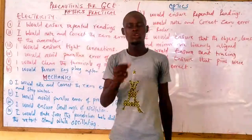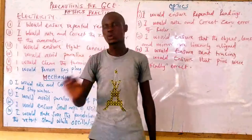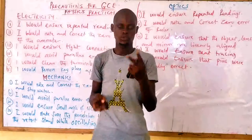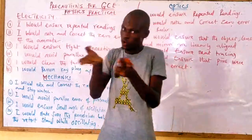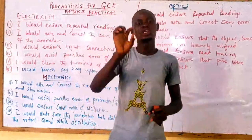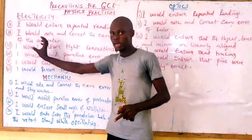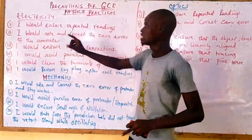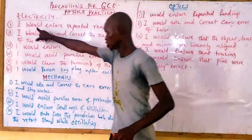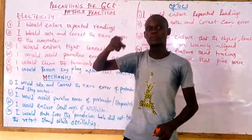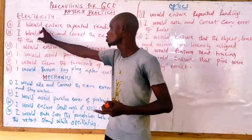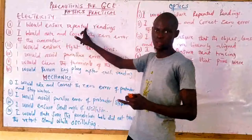For example, if you have to tabulate readings on current and you want to put in your precaution that you ensured repeated readings, it simply means you should add two values of current — I₁ and I₂. Adding two values of current shows that you took two different values, and then you can put in your precaution that you would ensure repeated readings. You use the word 'would' because you are not performing the experiment, you are reporting it.